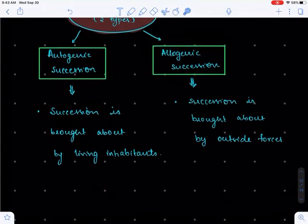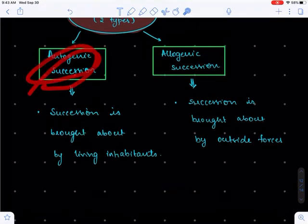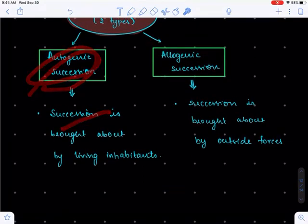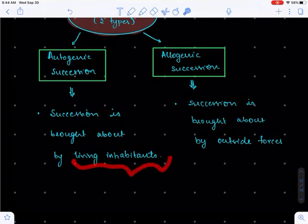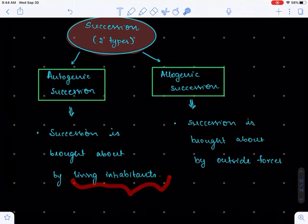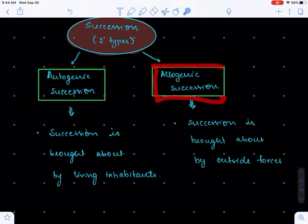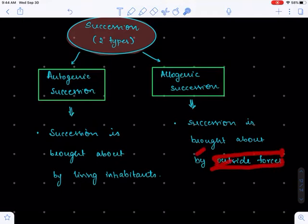Let's first understand autogenic succession. Autogenic succession is driven by living inhabitants. A way to remember this: auto is something driven by humans, so autogenic succession is human-driven. The opposite is allogenic succession, which is driven by outside forces, also considered natural forces.